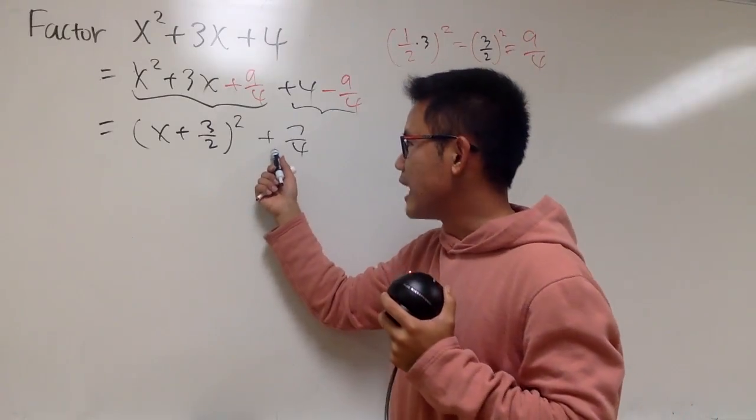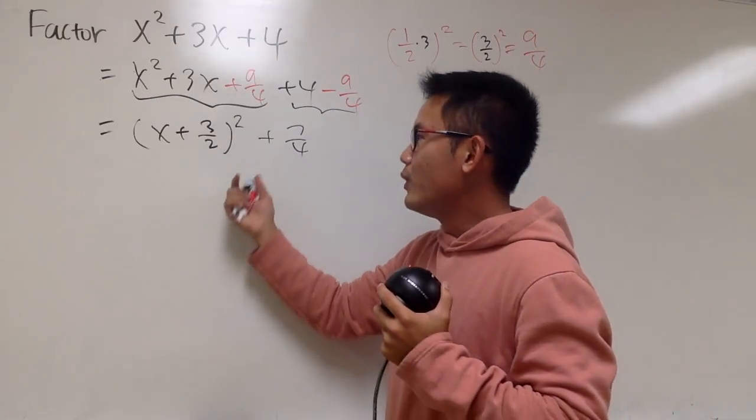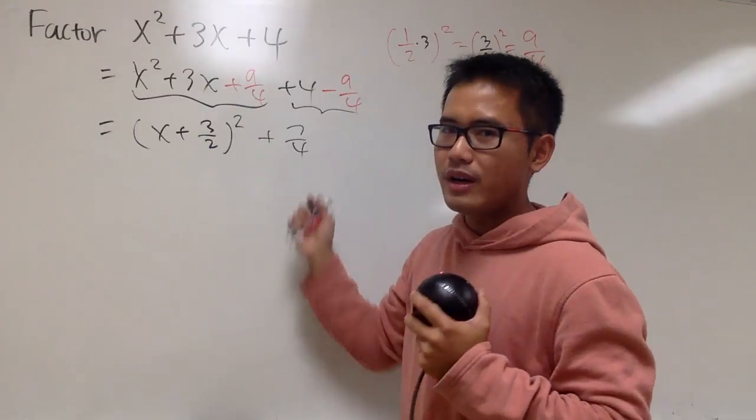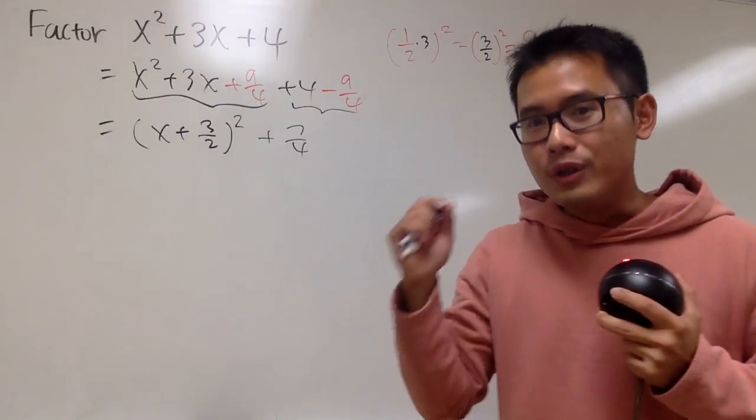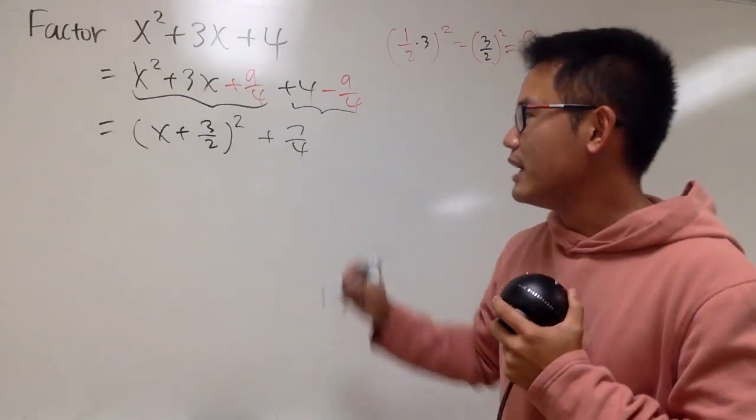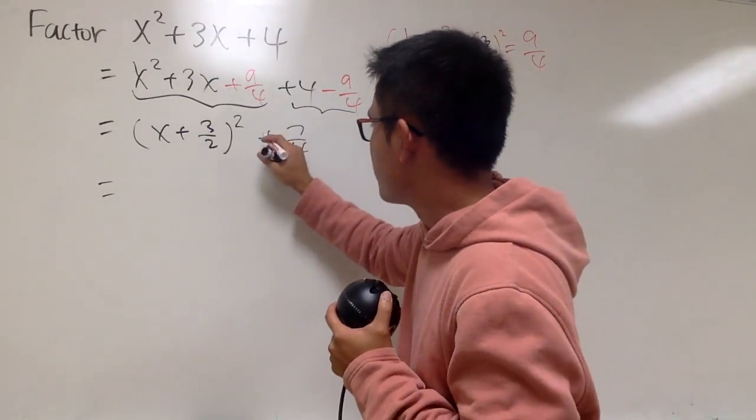And as you can see, this is the sum of two things. Technically, well, this is a square, this is not square. And then the problem is that we don't know how to factor the sum of two squares. We know how to factor the difference of two squares. And you see, I am going to just change the plus to minus, and let's see how to do that.